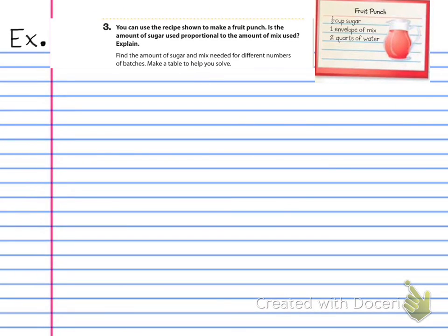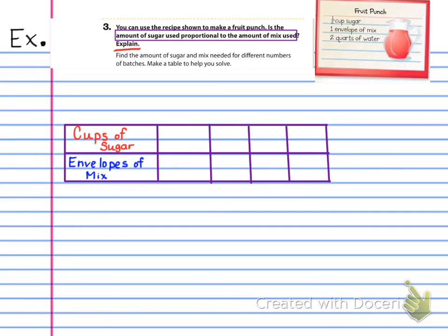So now you can see here that we have example three. So example three says to use, you can use a recipe shown to make a fruit punch. Is the amount of sugar used proportional to the amount of mix used? Explain. So the first thing that you want to do is go ahead and make a table. So now you're going to see that you have cups of sugar on the top and you have envelopes of mix on the bottom.